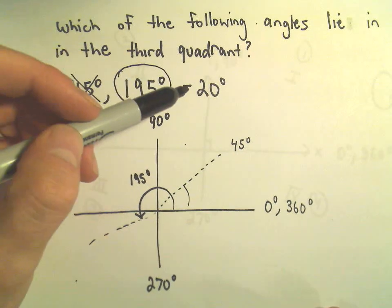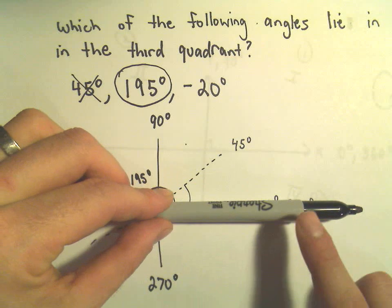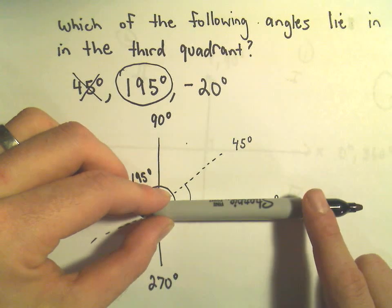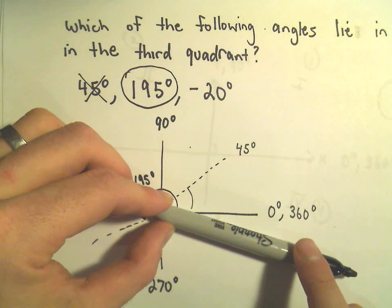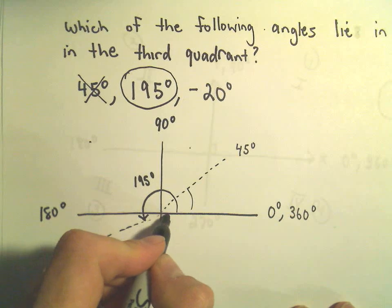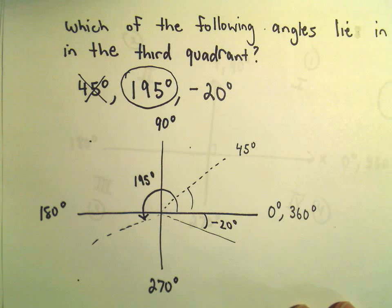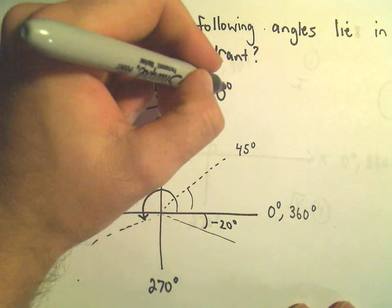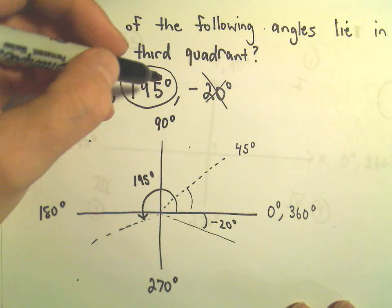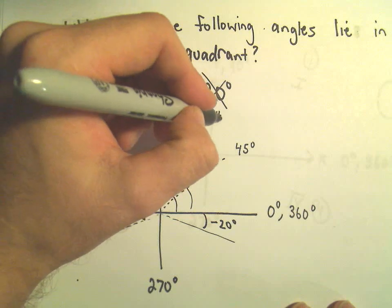Let's also look at negative 20 degrees. Since it's a negative angle, instead of going counter-clockwise, we now go clockwise. Negative 20 degrees would put you just a little bit down into the fourth quadrant. So: 45 degrees is in quadrant one, 195 is in quadrant three, and negative 20 is in quadrant four.